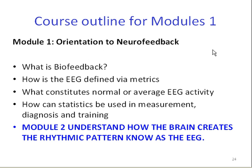Our course outline for Module 1, which was an orientation to neurofeedback, covered topics such as what is biofeedback, how is the EEG defined in metrics, what constitutes a normal or average EEG, and how can statistics be used in measurement, diagnosis, and training. The next module helps us understand how the electrical activity of the brain is formed and how we can measure the rhythmic pattern known as the EEG in a way helpful in diagnosing and training our clients. We invite you to look at Module 2 and continue on with this review of the BCIA curriculum Getting Started with Neurofeedback. Thank you.